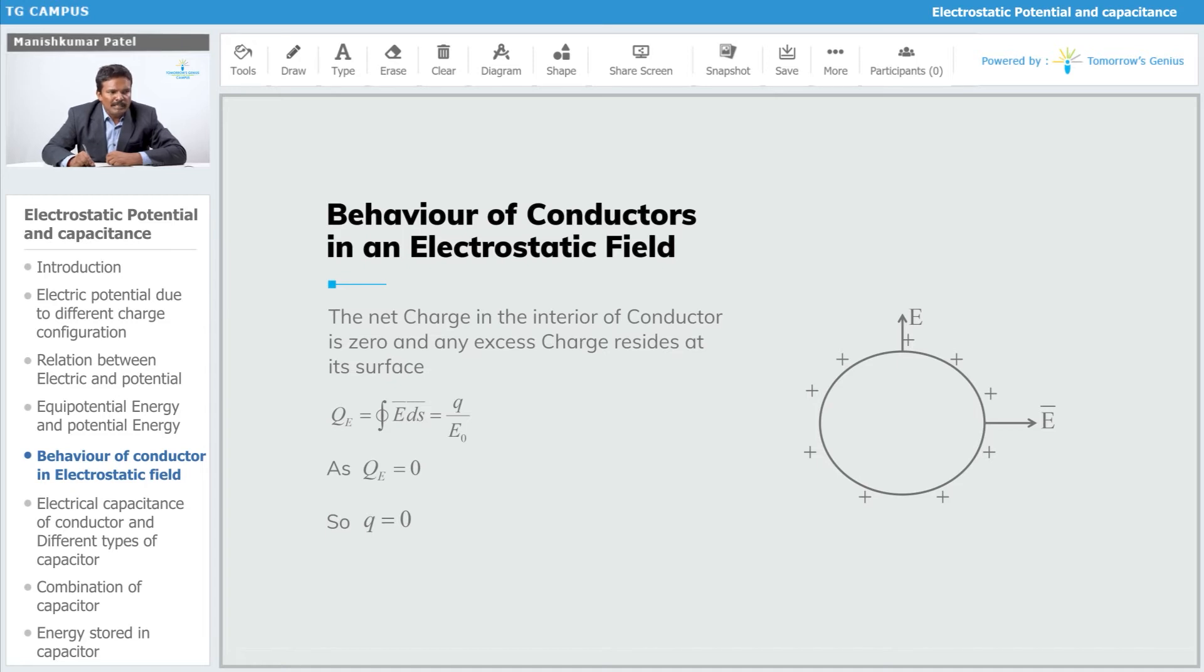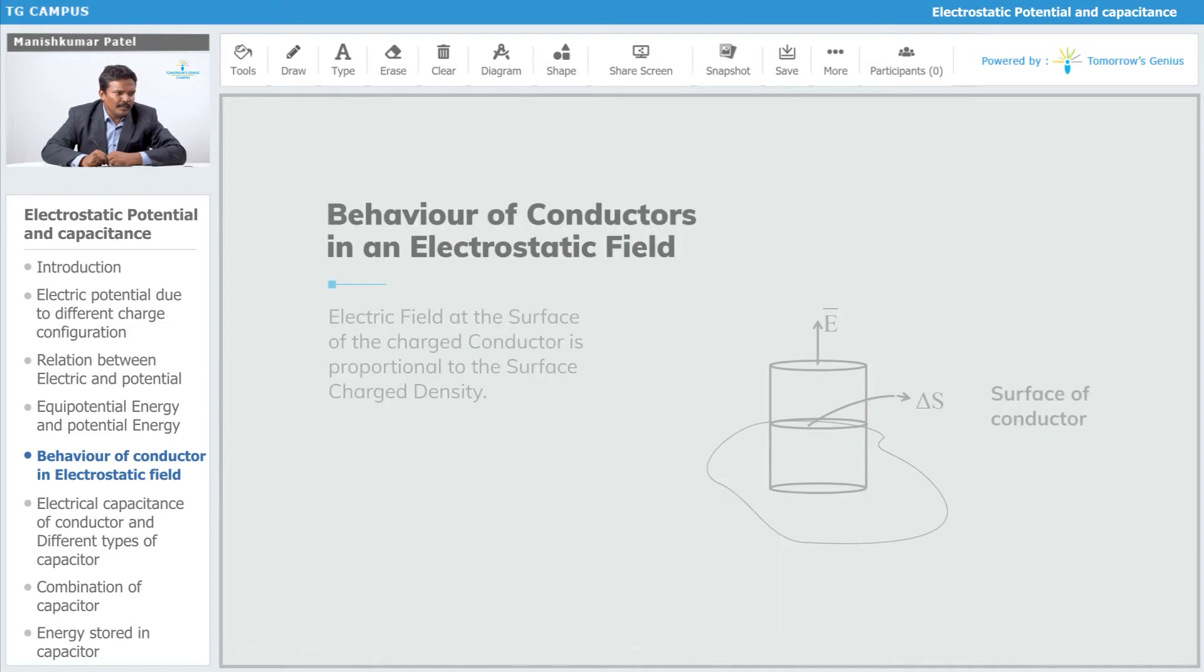You can prove that with the help of Gauss's theorem. That is in terms of integration: ∫E⃗·ds⃗ = q/ε₀. But since this charge is zero, obviously there is no charge inside the conductor, and you can prove that the net field is zero inside the conductor.